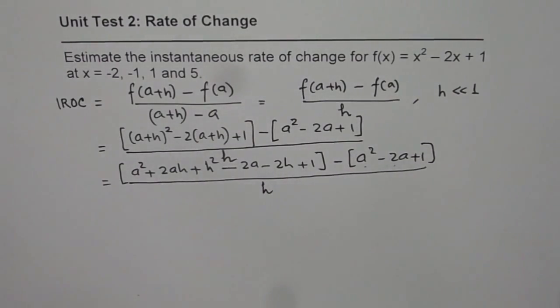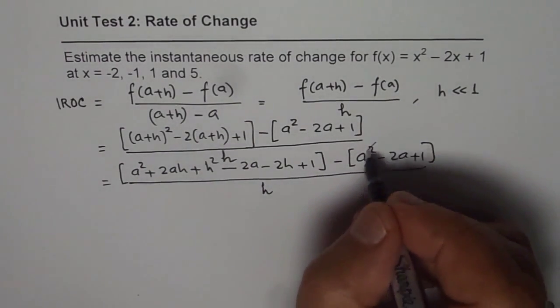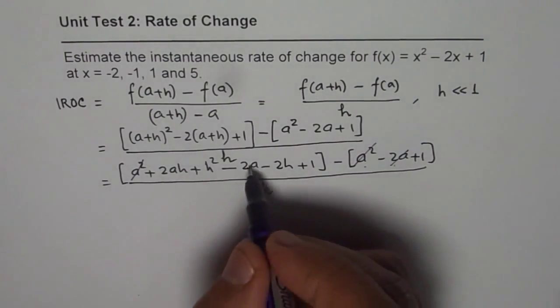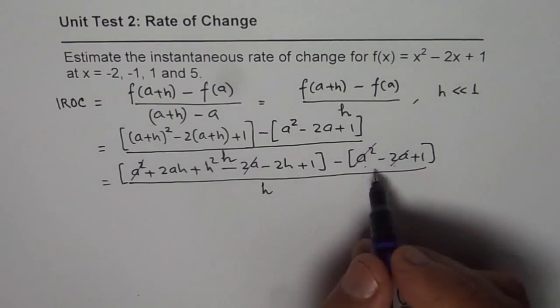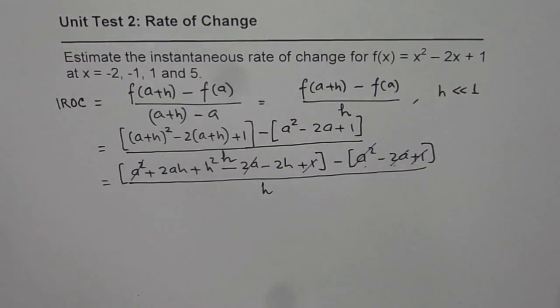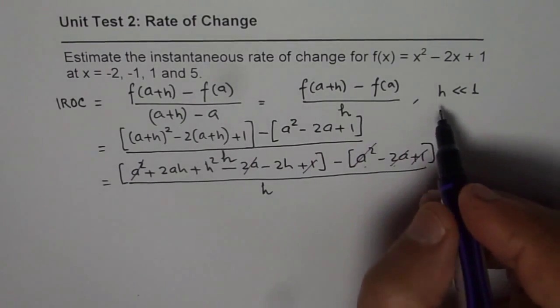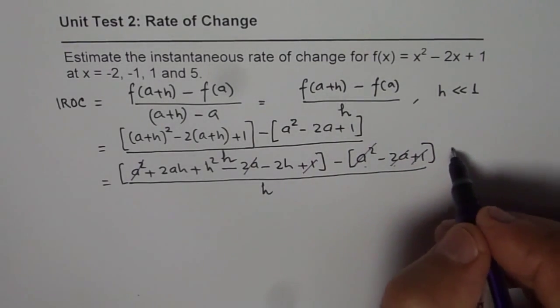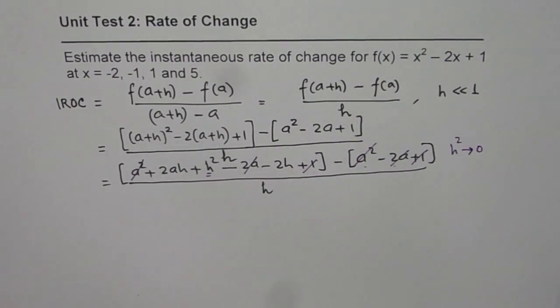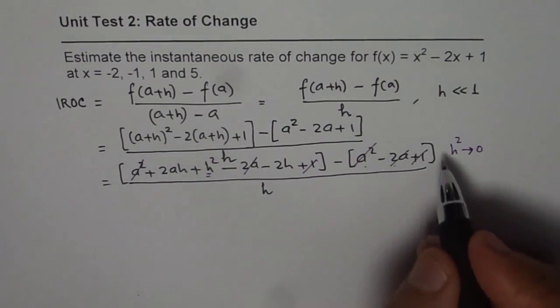I'll show you how: a² and a² cancel out. Similarly, when you take away 2a from minus 2a they cancel out, and 1 from 1. Remember, since h is very small, h² will approach 0, so we'll take this as 0 and will not include it in the next step.